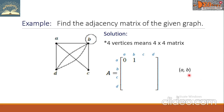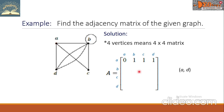Next, for AB. This is vertex A. This is vertex B. There is one edge connecting A to B, so we write here 1. Next is AC. This is vertex A. This is vertex C. There is one edge connecting the two vertices, so we write here 1. Next is AD. This is vertex A. This is vertex D. There is one edge that connects the two vertices, so we write here 1.